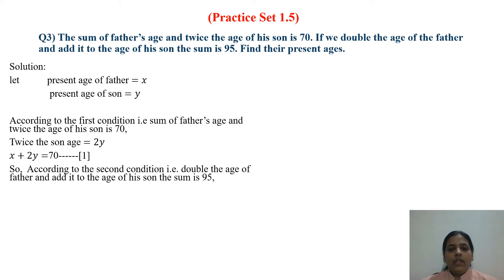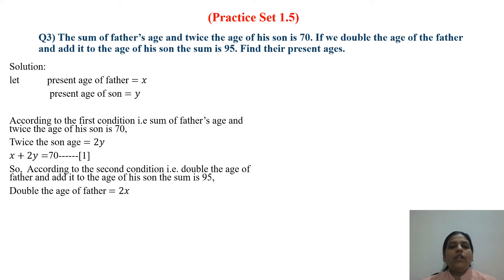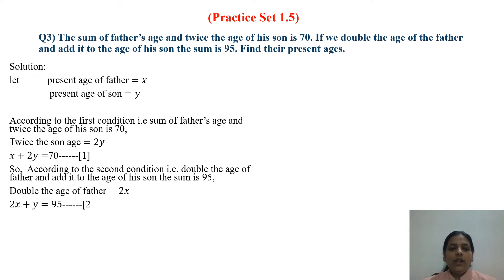According to the second condition, double the age of the father added to the age of his son gives a sum of 95. Double the father's age means 2X, and the son's age is Y. So the equation is 2X plus Y is equal to 95. This is equation number 2.